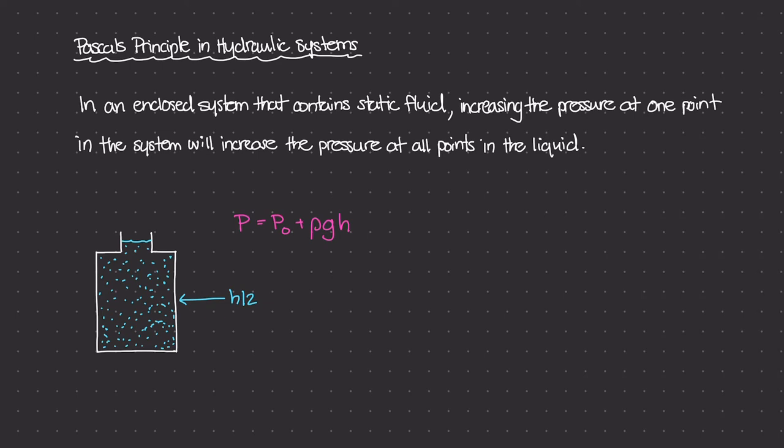in the depth of this container, then the pressure there, which I'll call PM for middle, so PM would equal P0 plus rho G, and then our depth would be H over 2.